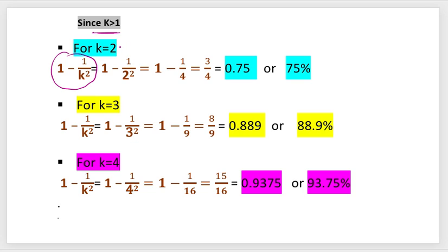Let us identify the values of 1 minus 1 upon k squared for different values of k. When k equals 2, we get 1 minus 1/4 equals 3/4, which is 0.75 or 75%. For k equals 3, we get 1 minus 1/9 equals 8/9, which is approximately 0.889 or 88.9%. We shift the decimal two places to get the percentage.